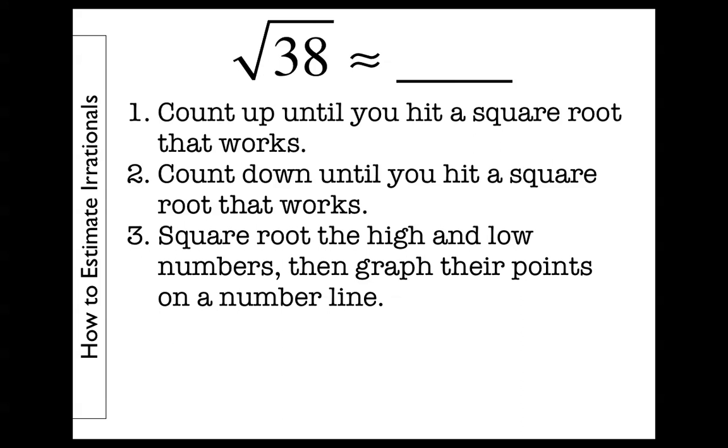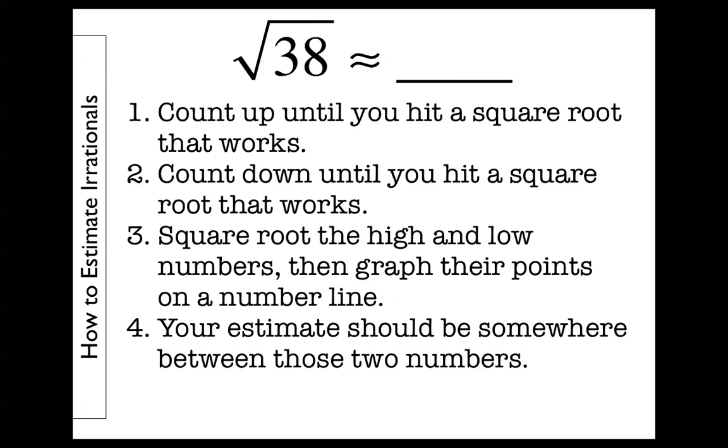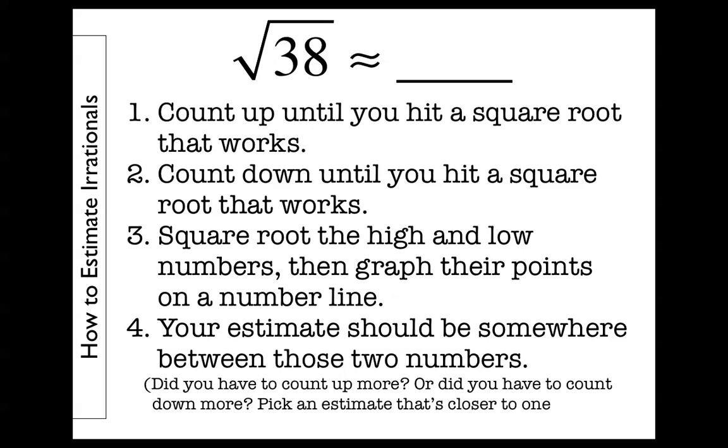Okay, so square root the high and low numbers, square root the 36 that we counted down to, square root the 49 that we counted up to. 36 has a square root of 6, 49 has a square root of 7, and our last step is our estimate should be somewhere between those two numbers, somewhere between 6 and 7. In this case, again, though, am I going to choose perfectly in half, like 6 and a half? That's between 6 and 7, but the square root of 38 was a lot closer to the square root of 36 than it was to the square root of 49. So my estimate should take that into account. Did I count up more or did I count down more? Pick an estimate that's closer to one or the other. In this case, I would say the square root of 38 is closer to the square root of 36, so my answer is going to be closer to 6, maybe 6.2 or 6.3 or something like that.